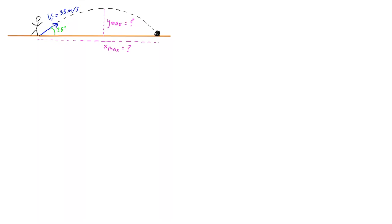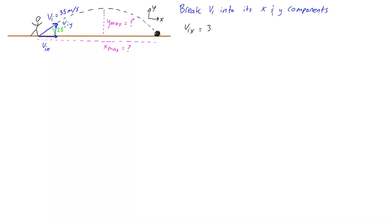We're going to analyze the horizontal and vertical motion separately using the kinematic equations. But first, let's break down the initial velocity into its x and y components. We identify positive x to the right and positive y going up. The x component of the initial velocity is vix, and using trigonometry: vix equals 35 meters per second times cosine of 25 degrees, which gives us 31.7 meters per second — a positive value, so it's going to the right.